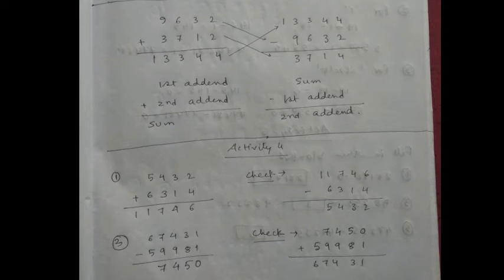Now we can start Activity 4. For addition: 5,432 plus 6,314. The answer is 11,746. To check: sum minus first addend equals the second addend. We get 5,432, which matches the second addend. So the checking is complete.